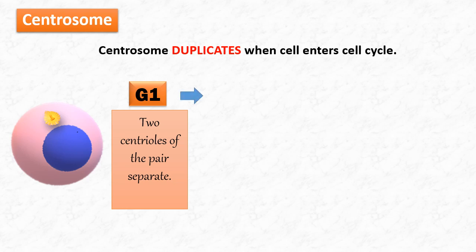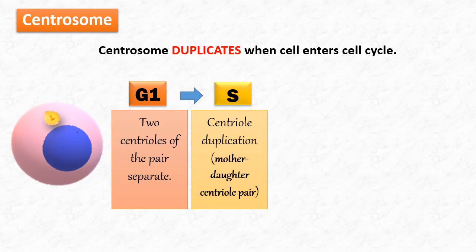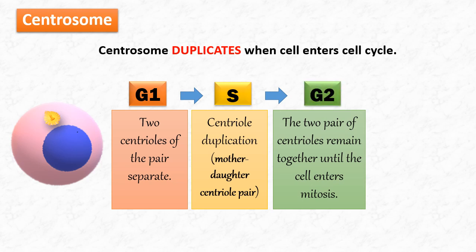Centrosome duplication begins in the S phase. The two centrioles separate and each centriole is duplicated. So we have now two pairs of centrioles each containing one mother and one daughter centriole. The two pairs of centrioles remain together at one side of the nucleus, until the cell enters mitosis.